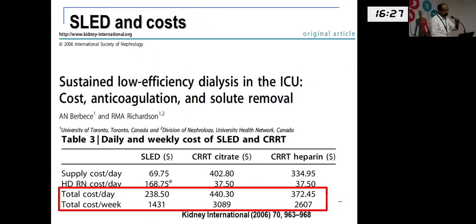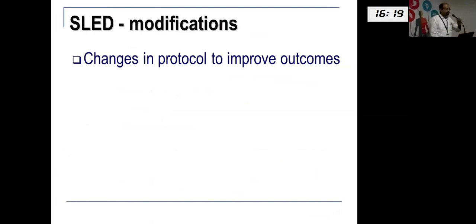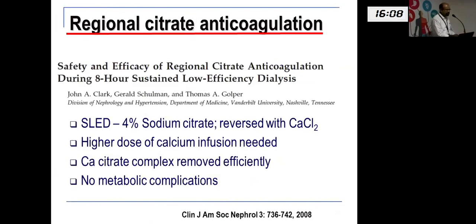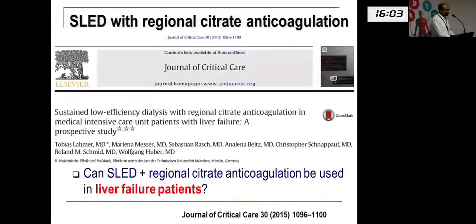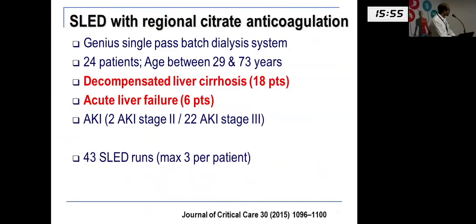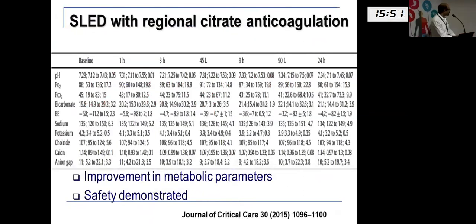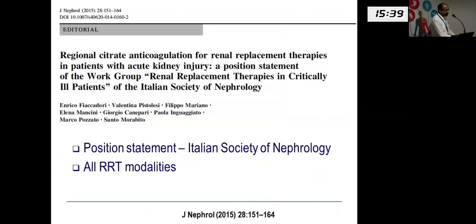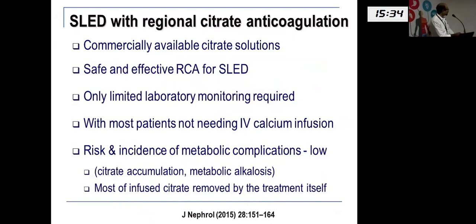For poisonings, SLED and CRRT are not treatments of choice, but if there is hemodynamic compromise, perhaps SLED may be better. Coming to cost, Dr. Richardson clearly showed that SLED was more advantageous in terms of money. The interesting modifications that SLED has undergone include regional anticoagulation with citrate. Although this was not previously considered except for CRRT, studies have shown that even in decompensated liver cirrhosis or acute liver failure, there was good improvement in metabolic parameters. The Italian Society of Nephrology now recommends citrate-based regional anticoagulation even for SLED.